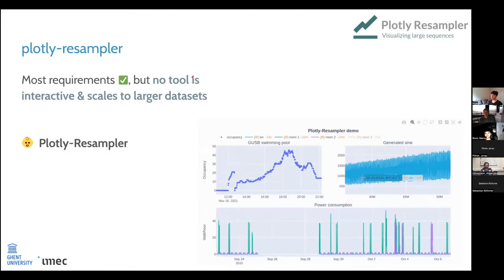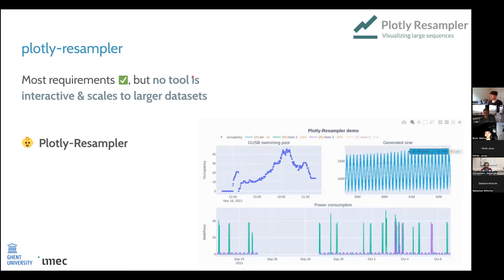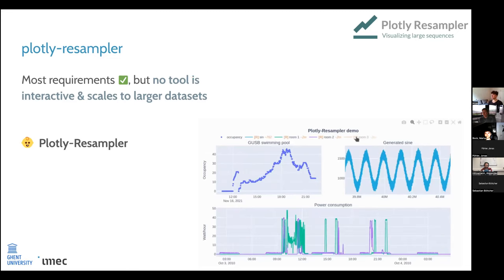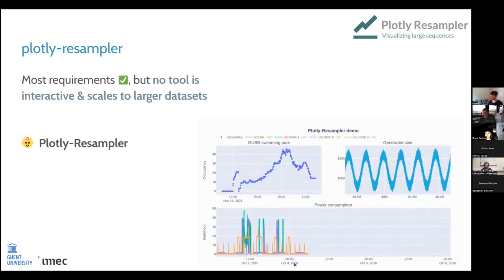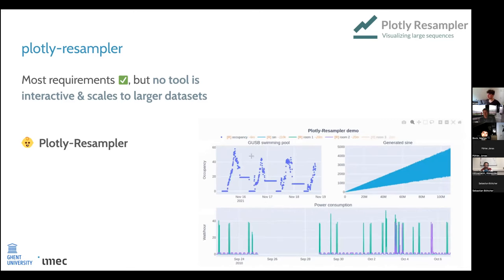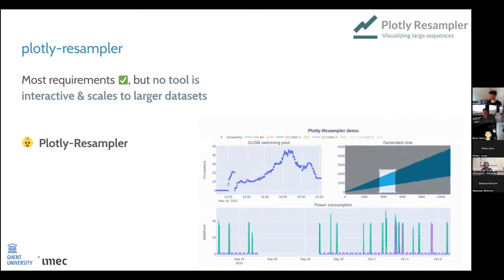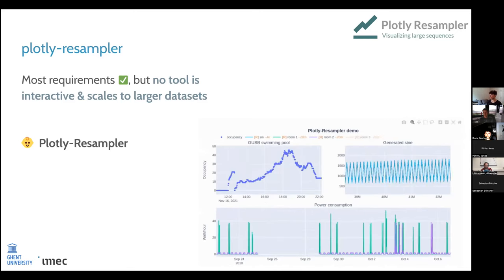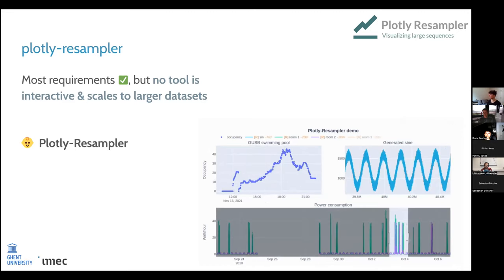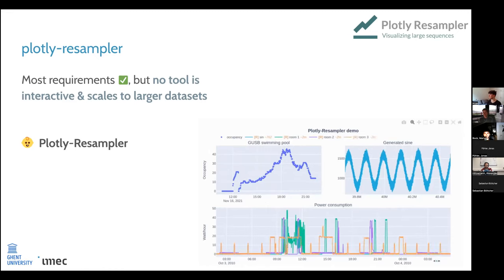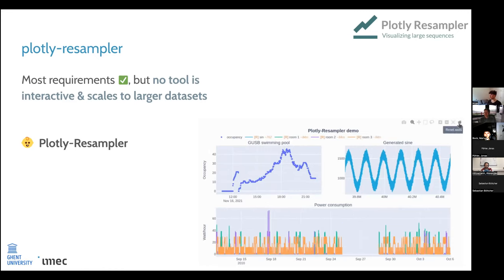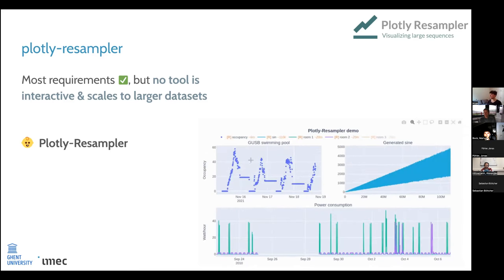Instead, you might want to show only some data points of interest or an aggregation highly relevant to the user, and when they zoom in you send more data to the front end. This is what plotly-resampler does. It's not a new visualization library but an add-on to an existing one — it renders data points respective to the user's front-end view. When the user zooms into a region it renders more data points there, so you still have a detailed view when zooming but it remains interactive and snappy.